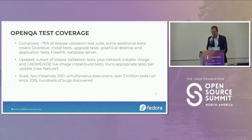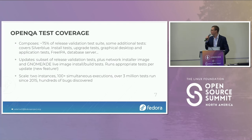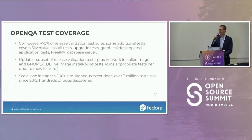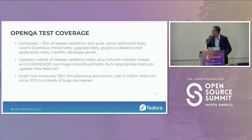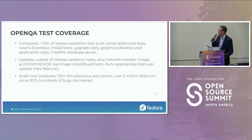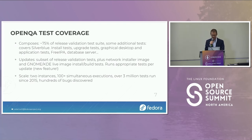The scale of our OpenQA deployment: we have two instances, production and staging, all running on hardware — the server end is on a VM but actual tests run on hardware machines. Right now we can run over 100 simultaneous tests across three architectures: x86-64, AArch64, and PowerPC-64. So far we've run over 3 million tests. I track all bugs caught by OpenQA with a tag in Fedora Bugzilla — it's over 400 or 500 at this point, and they're always important bugs.